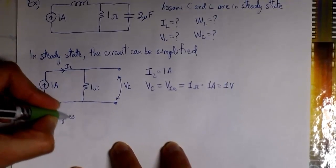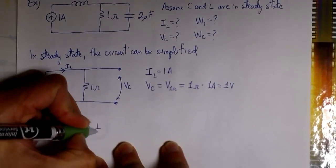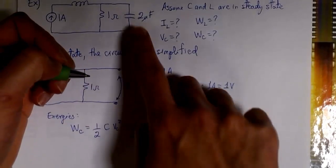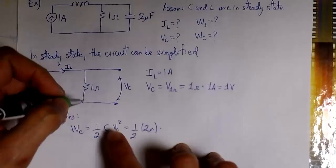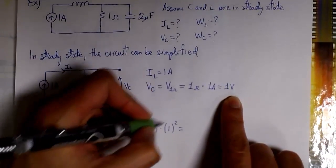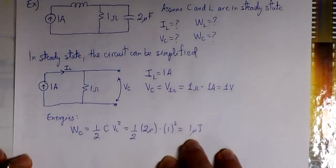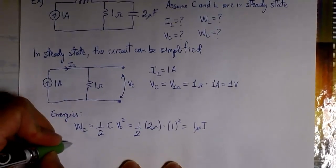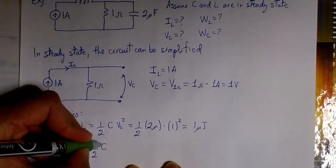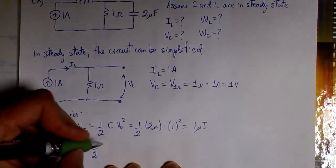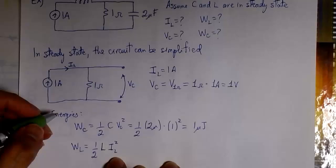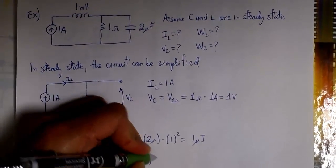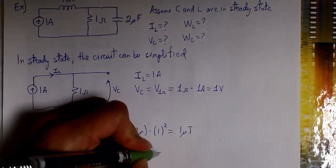That's also the value of the current flowing through L under steady state conditions. Now we can easily find the energy stored in the capacitor: that's 1/2 times the capacitance times the voltage squared. In this case it's 1/2 times C, which is 2 microfarads, times the voltage squared, which is 1 squared. So we get 1 microjoule. Similarly for the inductor, the energy in L is 1/2 times the inductance times the current squared, which is 1 amp squared. So we get 0.5 millijoules.